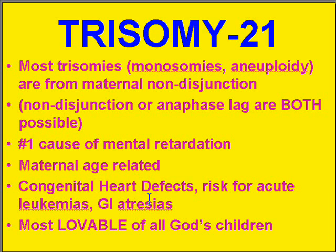Trisomy 21 has a variety of problems besides mental retardation, including congenital heart defects, risk for acute leukemias, and failure of parts of the GI system to develop — in other words, GI atresia.